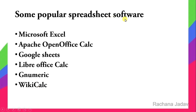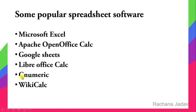Some popular spreadsheet software: Microsoft Excel is the most professional one. In OpenOffice it is known as Calc. Apache also has one. For online use, you can go with Google Sheets. For offline open-source use, there is LibreOffice Calc. Others include Gnumeric and WikiCalc.